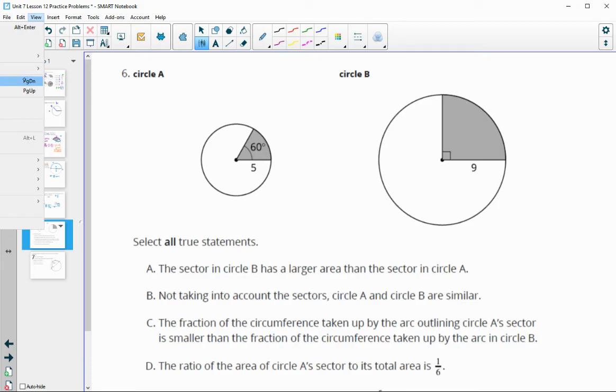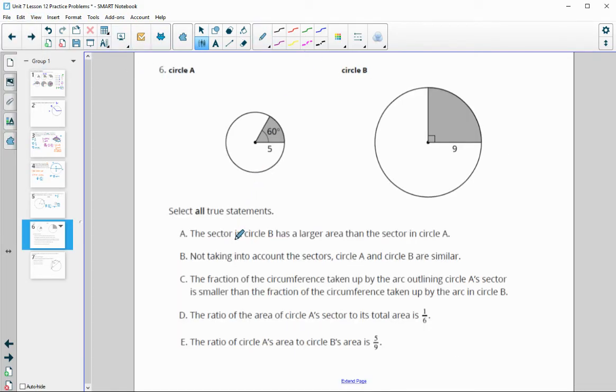Number six, select all statements that are true here given these two circles. The sector in circle B has a larger area than the sector in circle A. That would make sense because not only is the angle larger, this is a 60 degree chunk versus a 90 degree chunk, this is a larger portion of the circle and the radius is larger. So without calculating, you can tell that's going to be bigger. That's true.